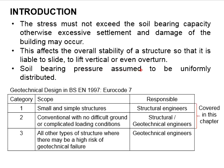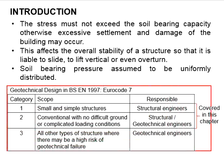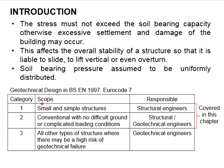The soil bearing pressure is normally assumed to be uniformly distributed depending on the property of the soil. This table shows different categories of geotechnical design in accordance with Eurocode 7. There are 3 categories, 1 to 3.